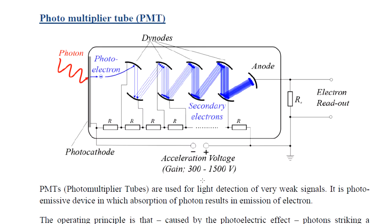PMT — photomultiplier tubes — are used for light detection of very weak signals. It is a photoemissive device in which absorption of a photon results in the emission of an electron.